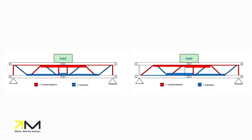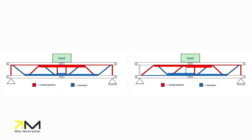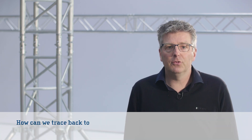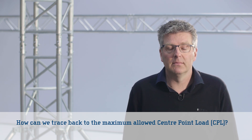If the load is placed in the middle, the forces are equal throughout the diagonals. The allowable normal force, under tension or compression, of a diagonal determines how much shear force can be applied. How can we trace back to the maximum allowable center point load, CPL?